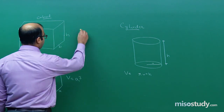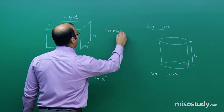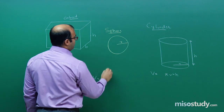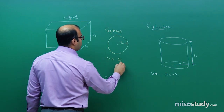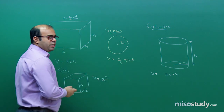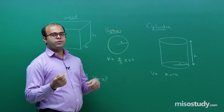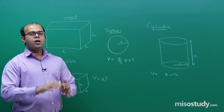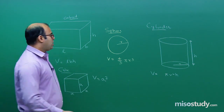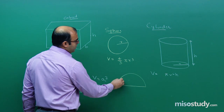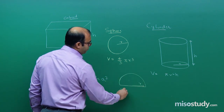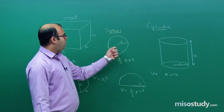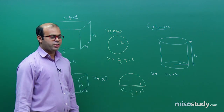Similarly, for a sphere with radius R, the volume is given as 4/3 πR³. Unlike surface area where we distinguished curved and total surface area, for volume there is just one value — the whole volume contained. For a hemisphere of radius R, the volume is 2/3 πR³, which is half of the sphere's volume.